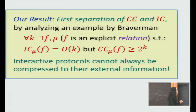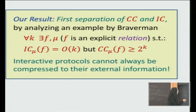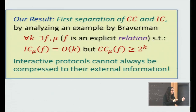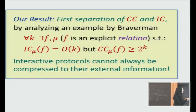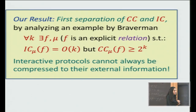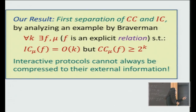One drawback is that the f we have is not actually a function — we would have wanted a function but couldn't get it. Our f, following the example suggested by Braverman, is a relation or a search problem, meaning that on every pair of inputs x, y there may be many possible answers. For this task, in order to perform it, you need to reveal very few bits of information — only o(k) bits — but the communication required is at least 2 to the k. This shows that interactive protocols cannot always be compressed to their external information cost.